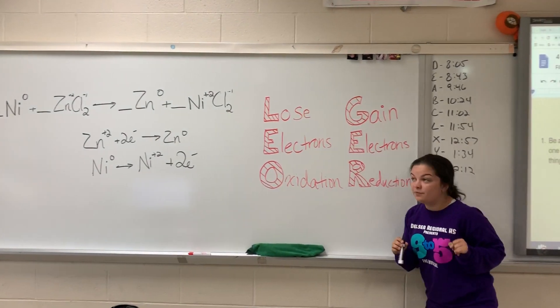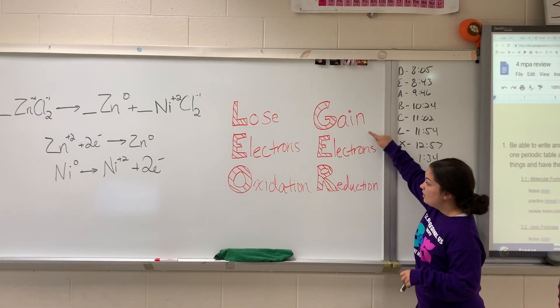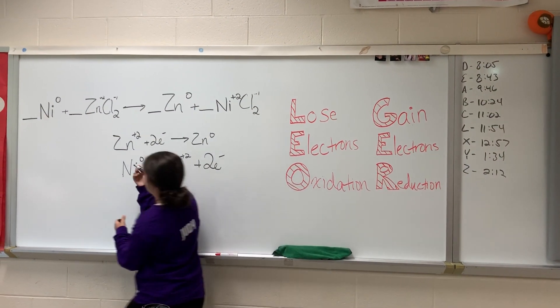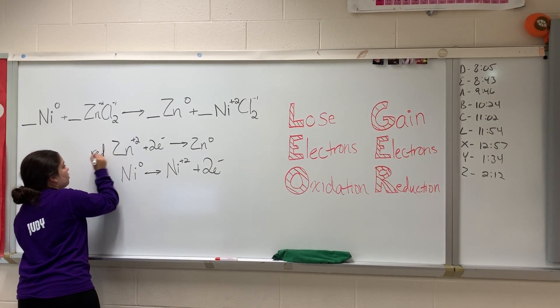So if we come back over here, gaining electrons equals reduced. So because zinc is gaining two electrons, this is a reduction.